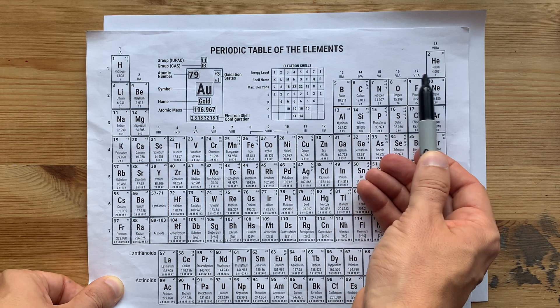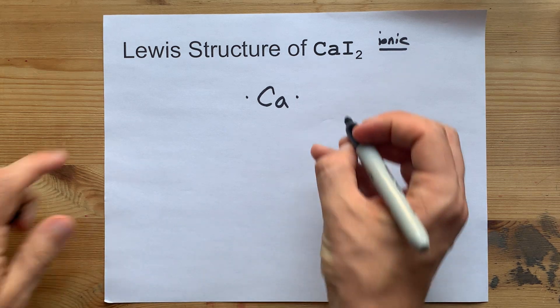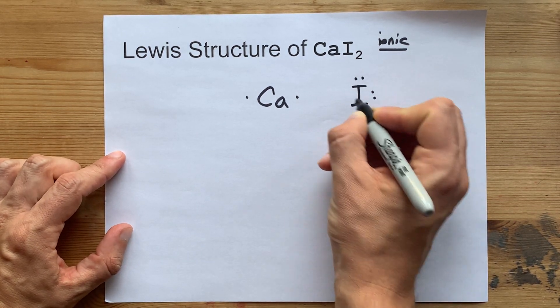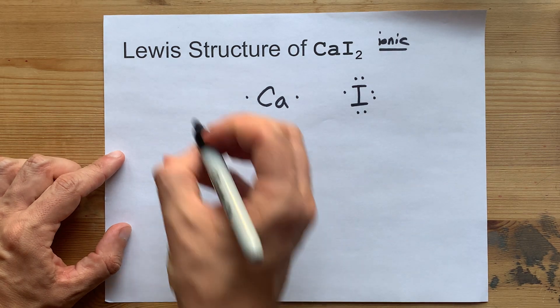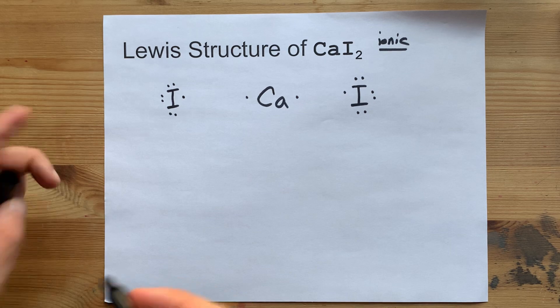Iodine is in group 17. Those atoms bring seven valence electrons each. So I'm going to draw the iodine. One, two, three, four, five, six, seven valence electrons. One, two, three, four, five, six, seven valence electrons.